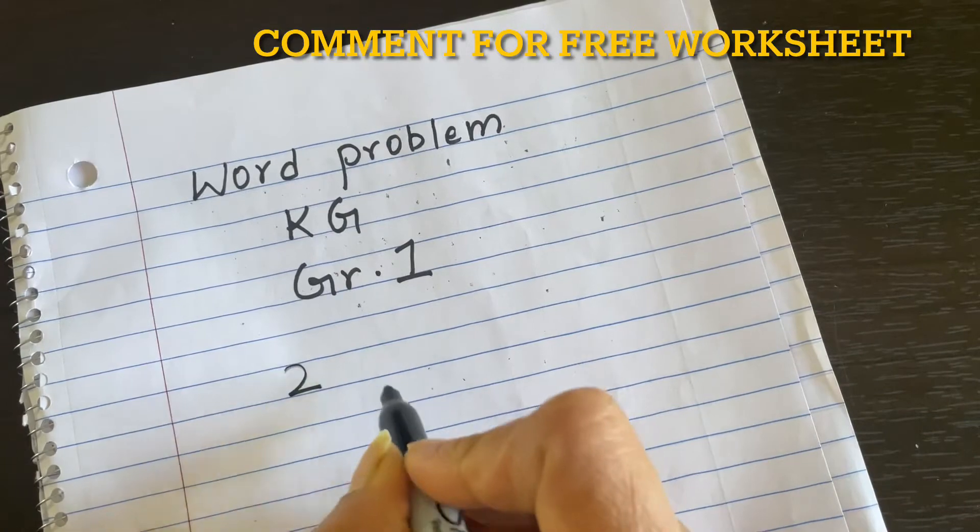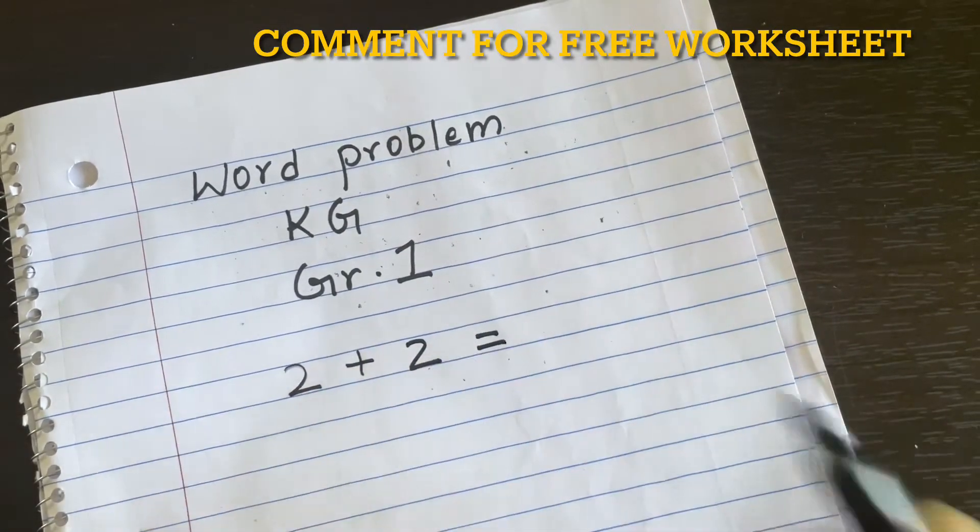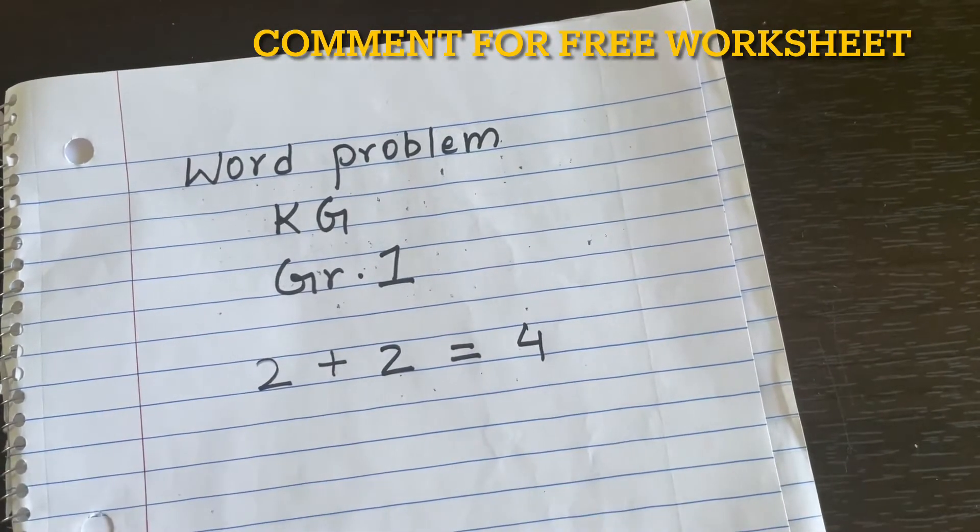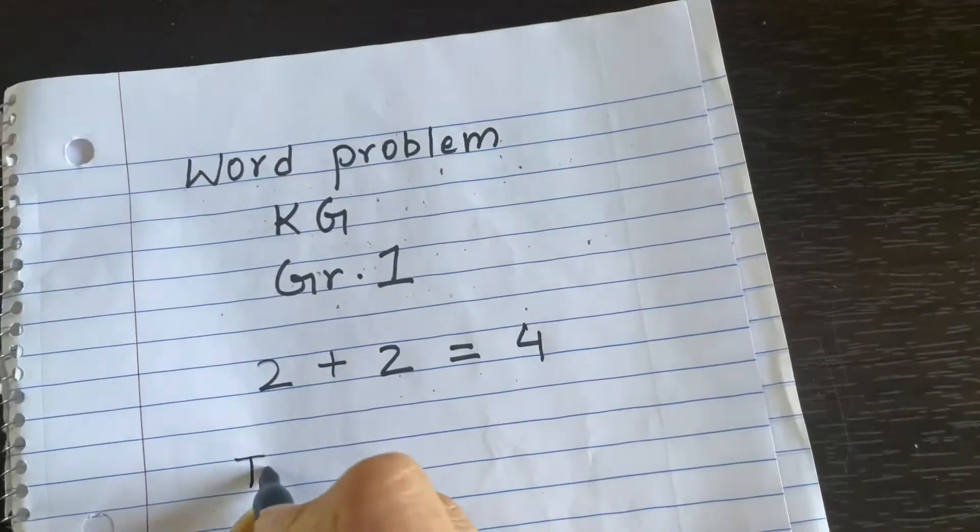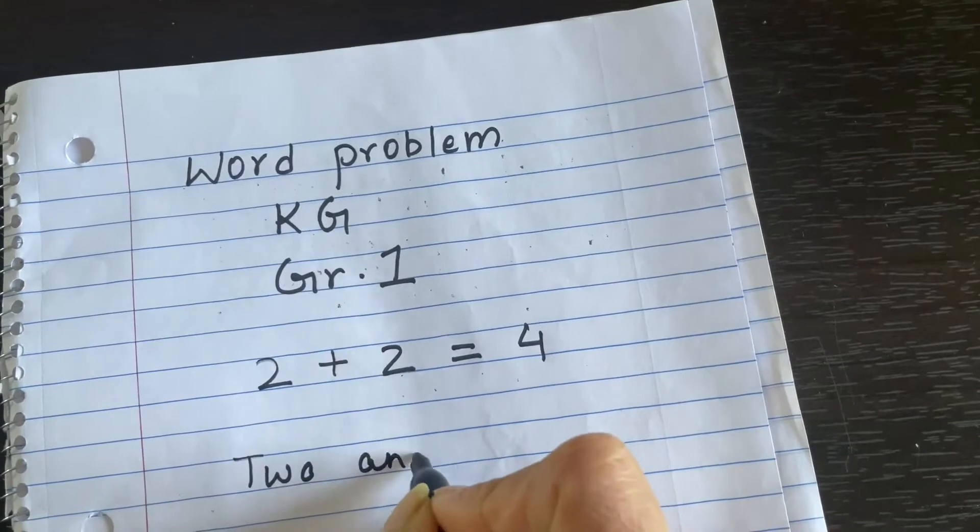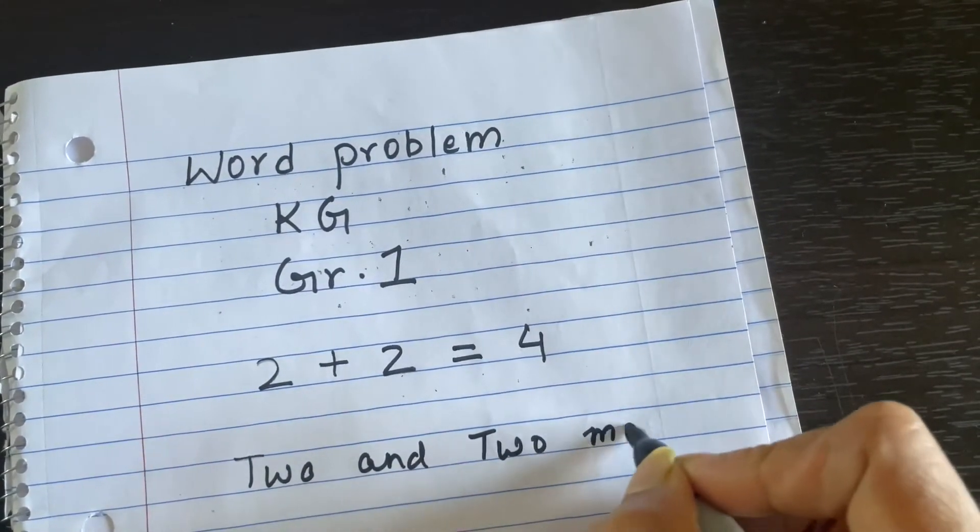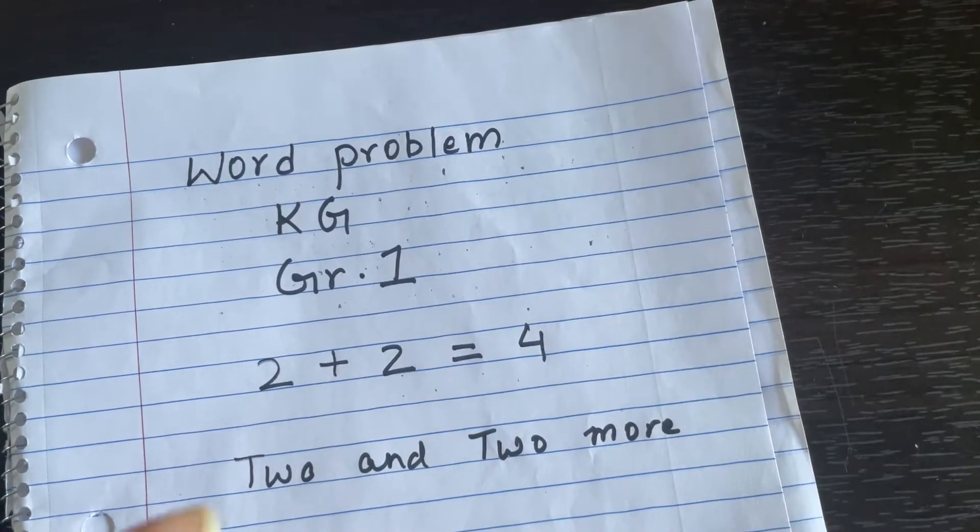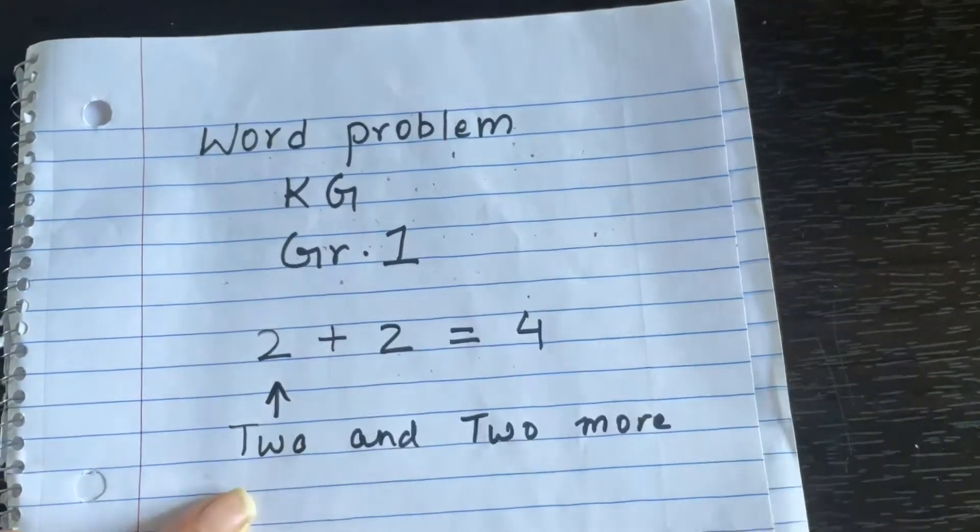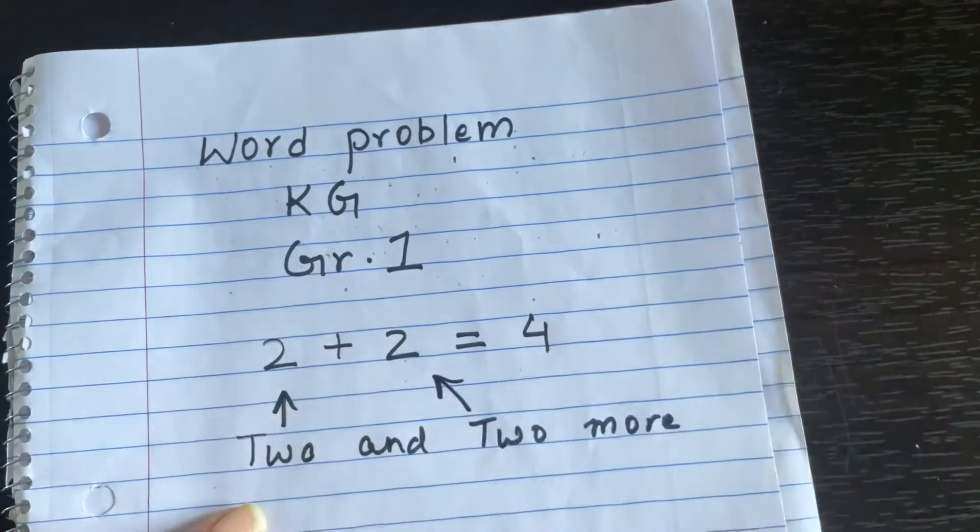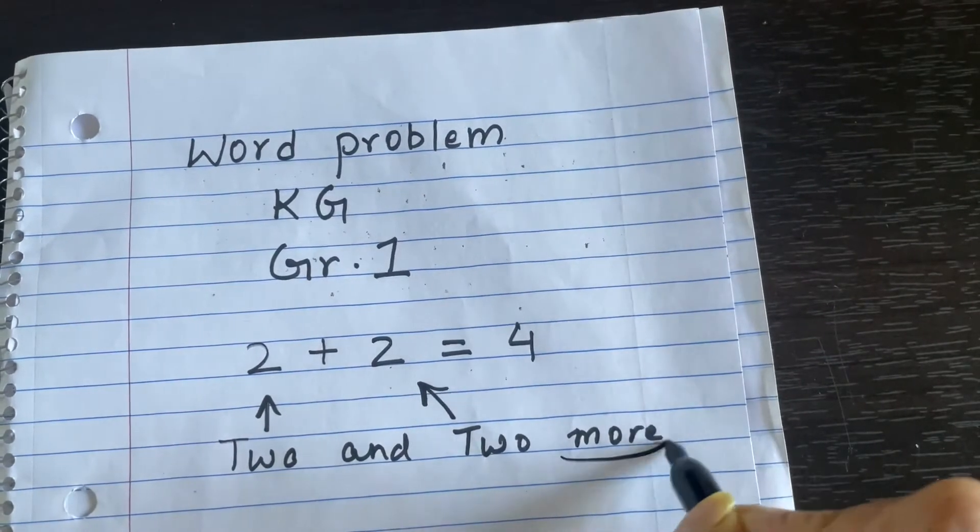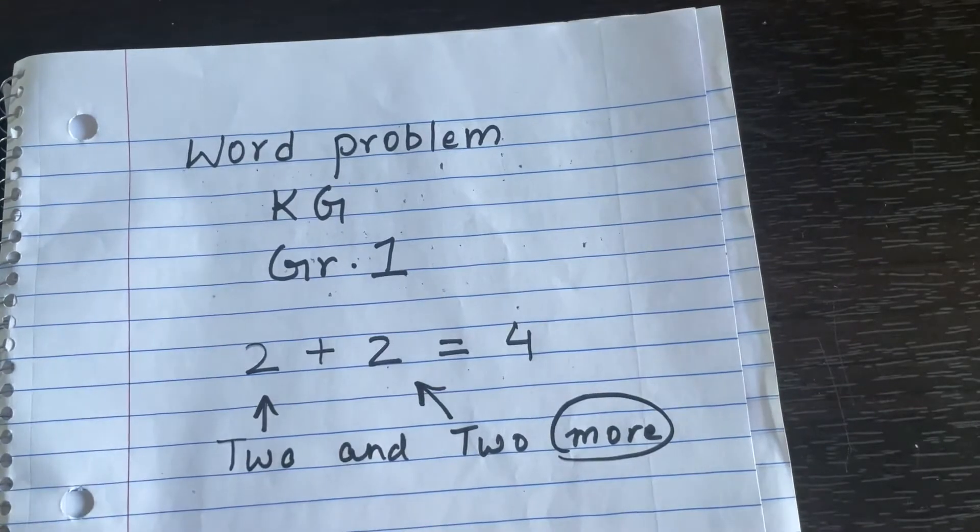Let's see. It's easy when your child sees two plus two - they will immediately give you the answer four. But when we use the same thing in words, it becomes a little challenging. Two and two more. Now we need to understand this. This two is also two, but where is the plus sign? When you see more, it means you are adding. That's how this more becomes the plus.